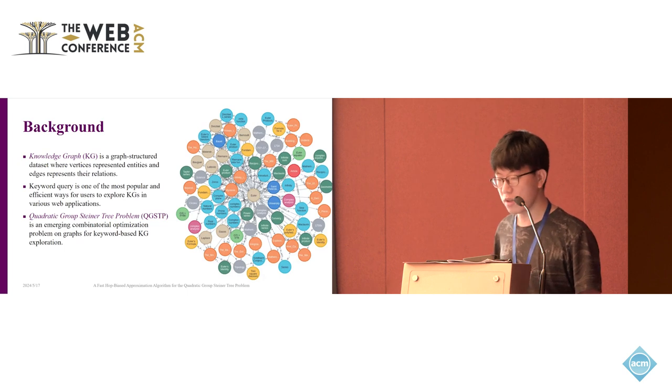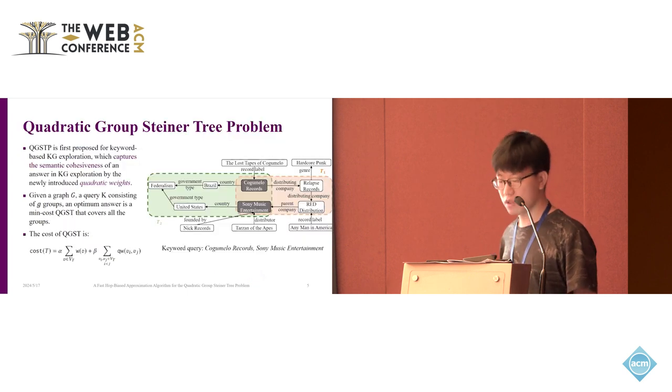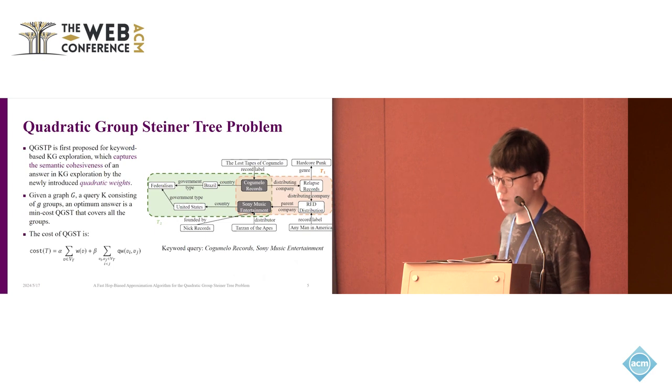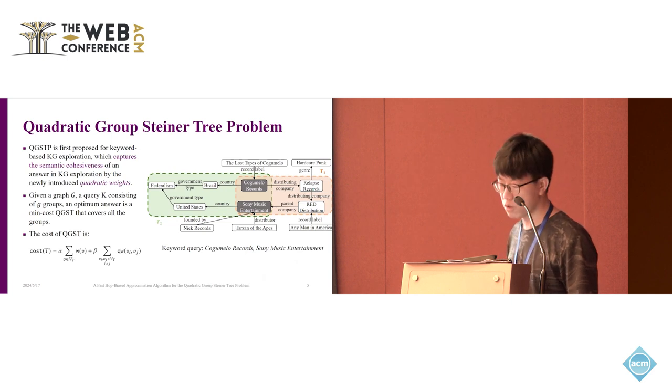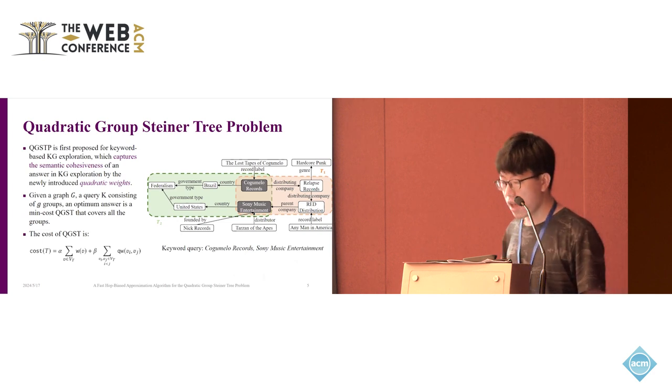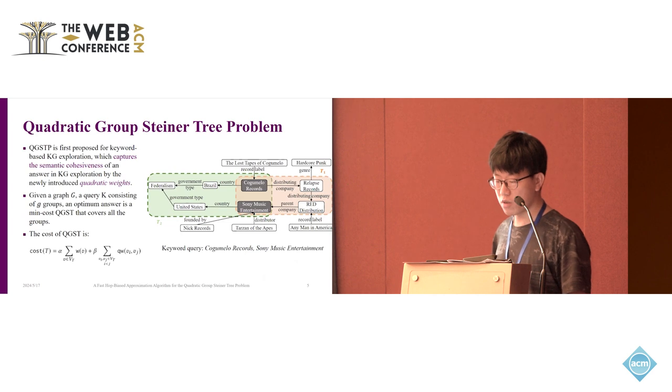The quadratic standard tree problem is referred as QGSTP. It is an emerging combinatorial optimization problem on graphs. QGSTP is first proposed for the keyword-based knowledge graph exploration. It captures the semantic cohesiveness of the KG exploration by the newly introduced quadratic width, as shown in the QW in the below formulation. Formally, the input of the QGSTP is a graph and a query.